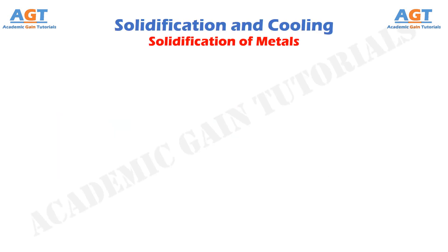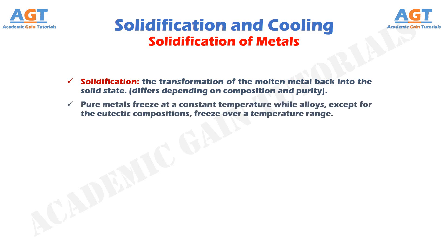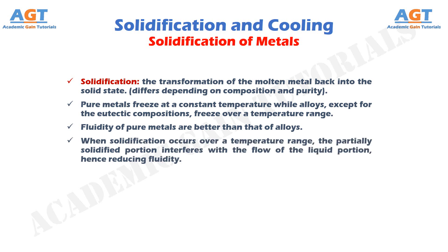Solidification of metals. Solidification is the transformation of the molten metal back into the solid state. But it differs depending on composition and purity. Pure metals freeze at a constant temperature, while alloys — except for the eutectic compositions — freeze over a temperature range. Fluidity of pure metals is better than that of alloys. When solidification occurs over a temperature range, the partially solidified portion interferes with the flow of the liquid portion, hence reducing fluidity.